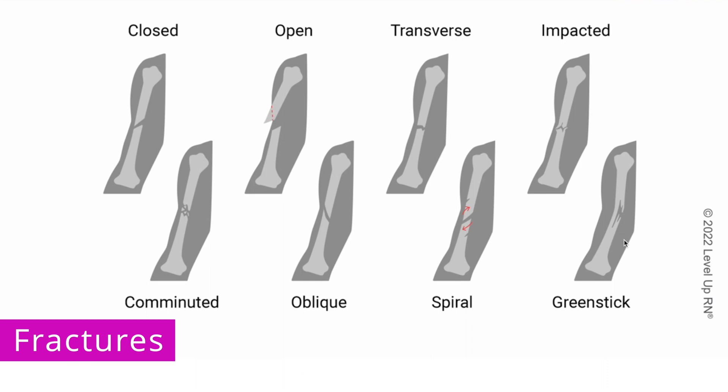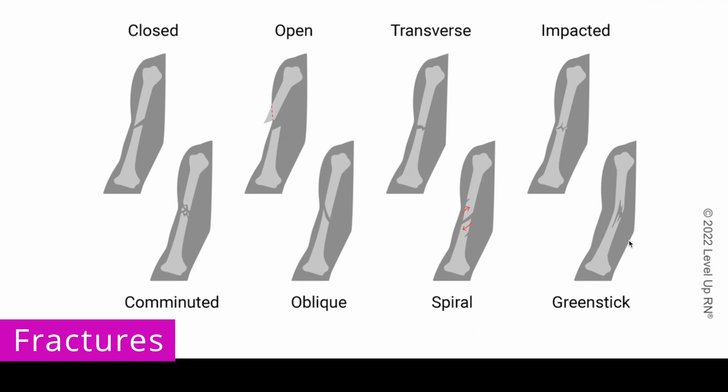And then finally, a greenstick fracture is a partial fracture where only one side of the bone is broken. Signs and symptoms of a fracture include pain, edema, ecchymosis, crepitus, and deformity in the affected extremity.